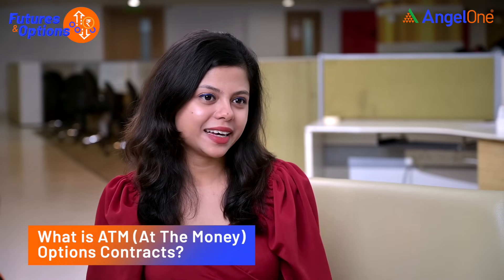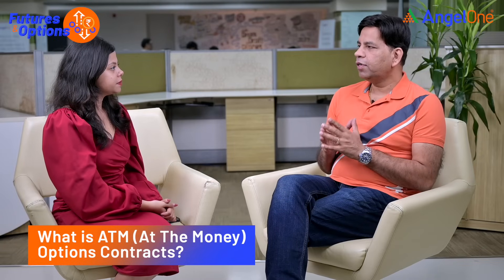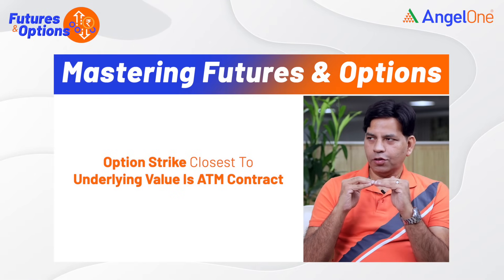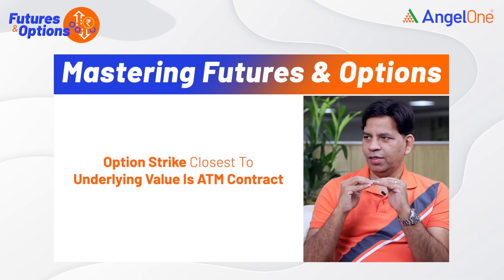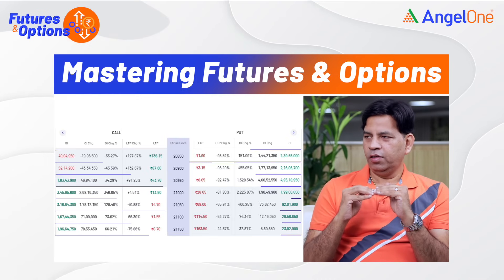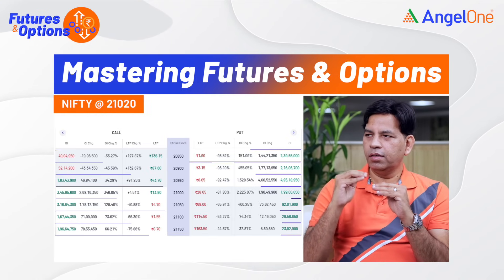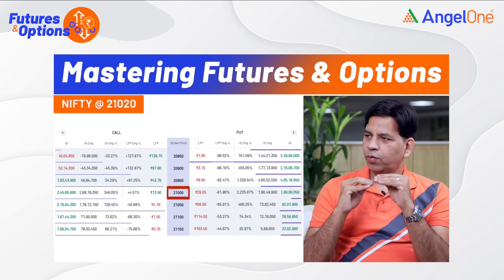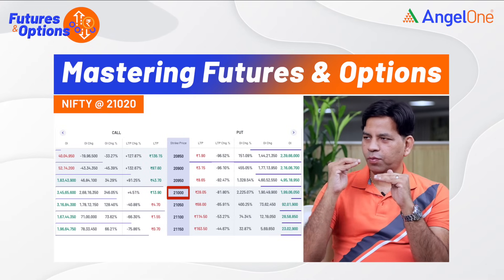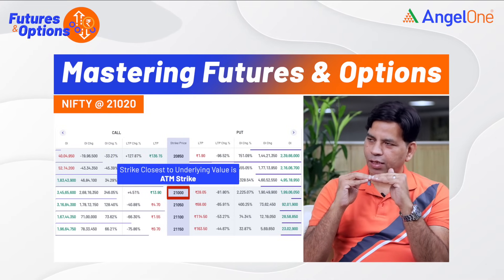Talking about at the money options — ATM option is the option strike closest to the underlying price. For example, if Nifty is at 21,020, then the 21,000 strike is closest to 21,020, so that is the at the money option. People trade ATM options and also slightly out of money options.